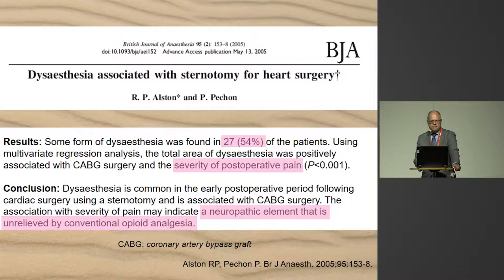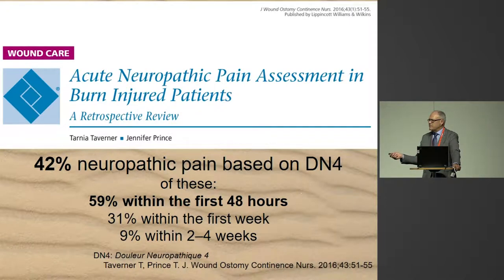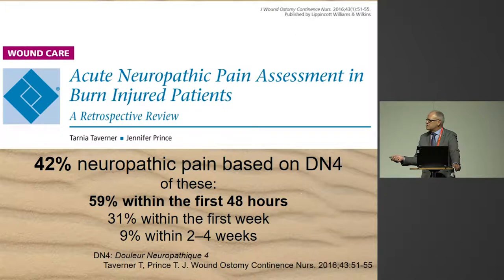Neuropathic elements are often unrelieved by conventional opioid analgesia, which is the reason why acute neuropathic pain is often poorly treated. Looking at injuries: at the West Australian Burn Centre at Royal Perth Hospital, now moved to Fiona Stanley Hospital, 42% of patients with burns injury scored positive on the French screening tool DN4.